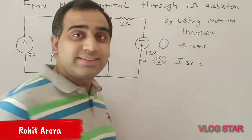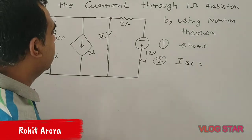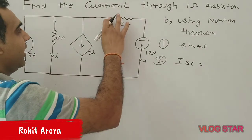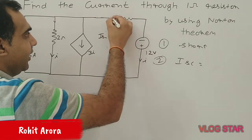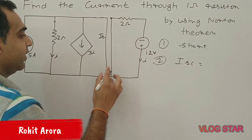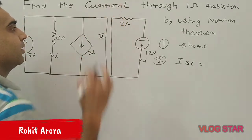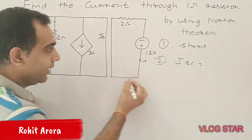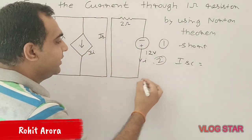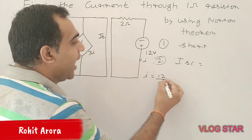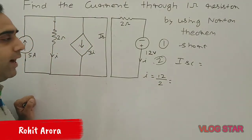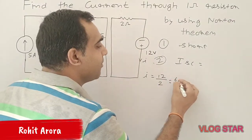Now how to calculate this ISC — let's think about what current flows from the circuit because of this voltage source. Let me redraw this circuit differently. This current I is calculated as V by R, which is 12 volts divided by 2 ohms, giving 6 amperes.